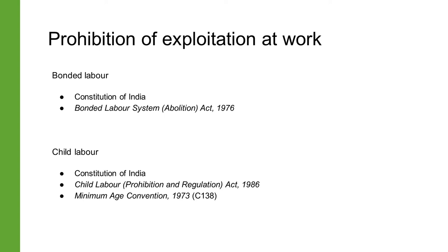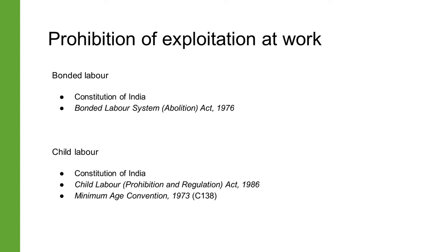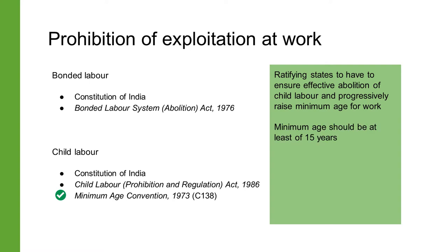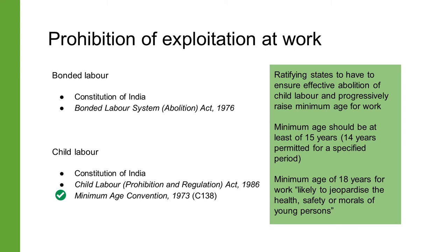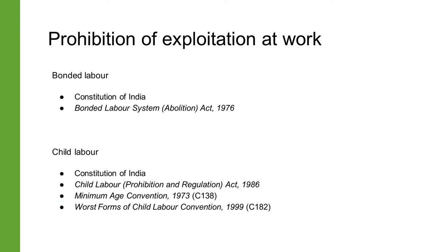The Minimum Age Convention of 1973, which is Convention 138 of the ILO, requires ratifying states to pursue a national policy designed to ensure the effective abolition of child labor and to progressively raise the minimum age for admission to employment. Countries are free to specify a minimum age with a minimum of 15 years, but 14 years is also possible for a specified period of time. The minimum age of 18 years is specified for work likely to jeopardize the health, safety or morals of young persons.